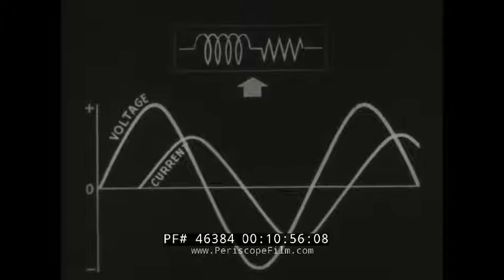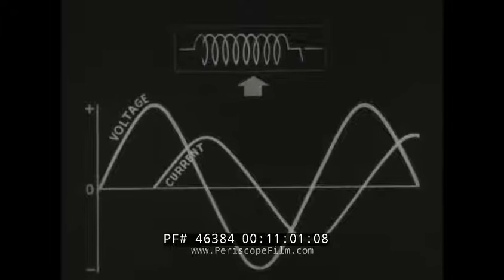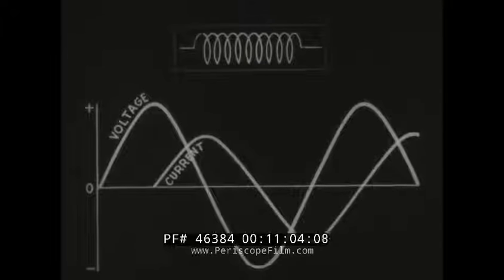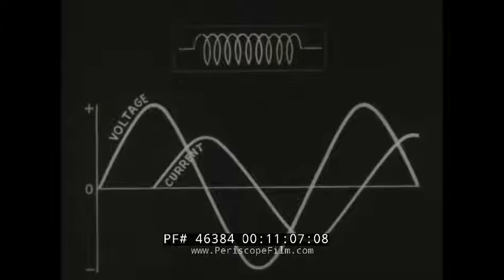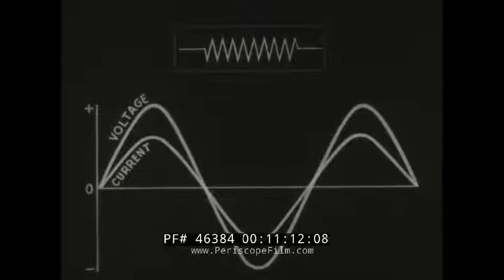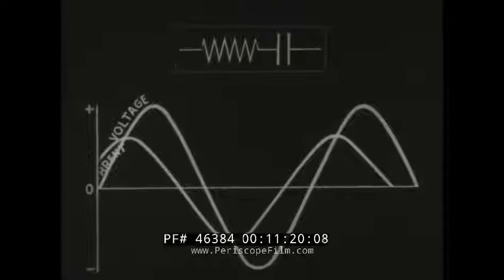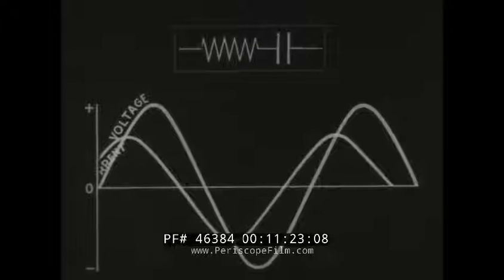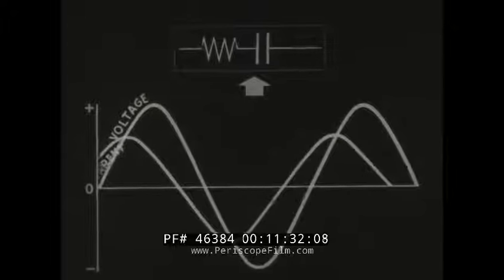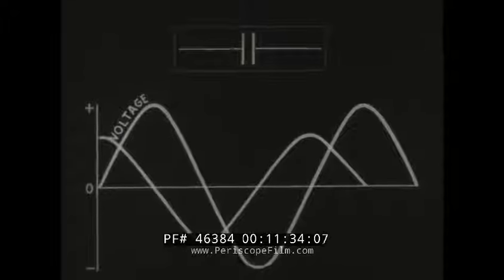More resistance is now removed, and a comparable amount of inductive reactance is substituted. Finally, a point is reached where there is no resistance left, and inductive reactance alone displaces the current curve to its maximum distance to the right. Starting again with a purely resistive circuit, capacitive reactance is substituted for resistance. This displaces the current curve to the left, showing that the current now leads the voltage. When the total opposition becomes capacitive reactance only, the curve reaches its maximum displacement to the left.